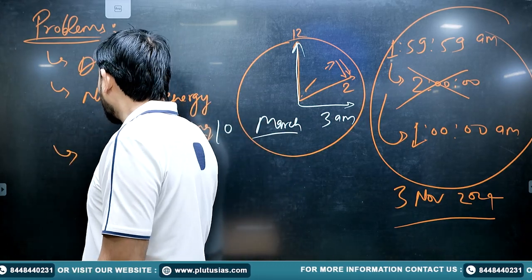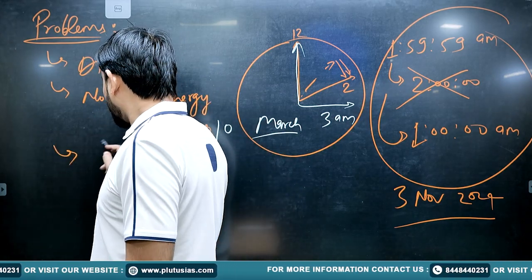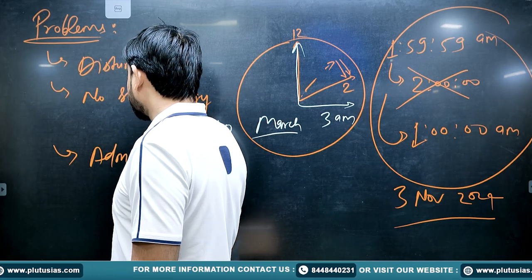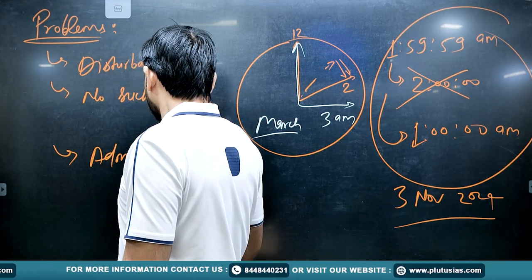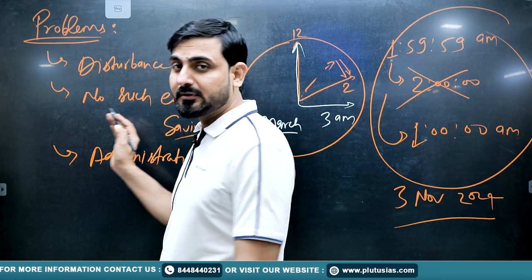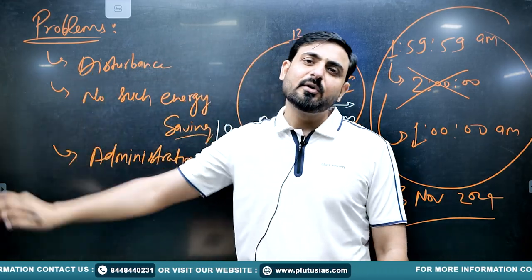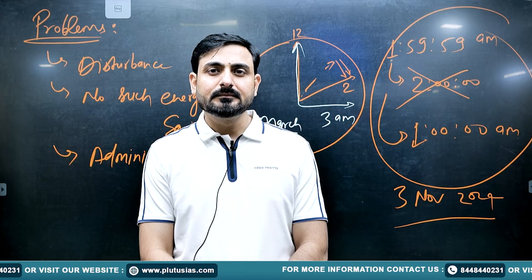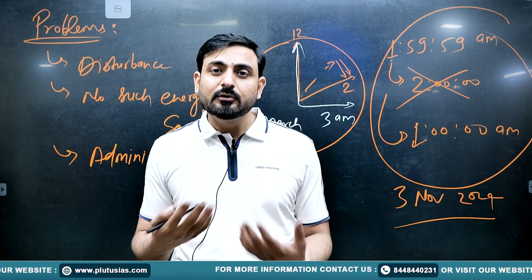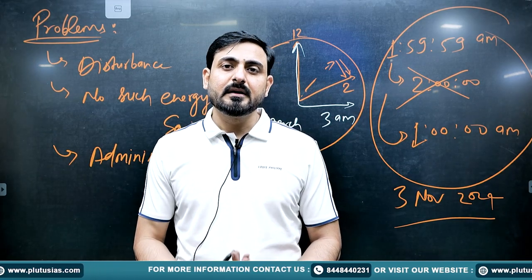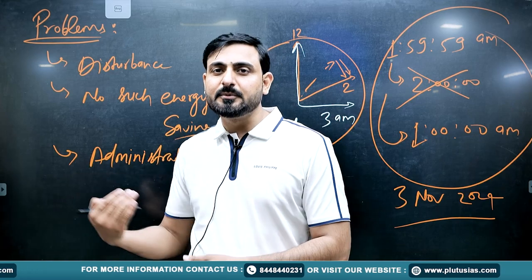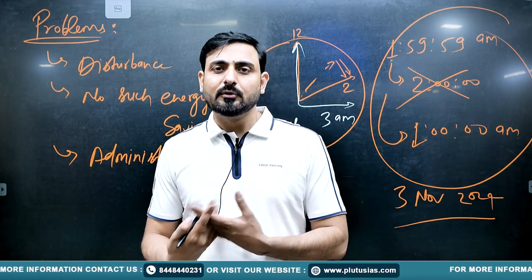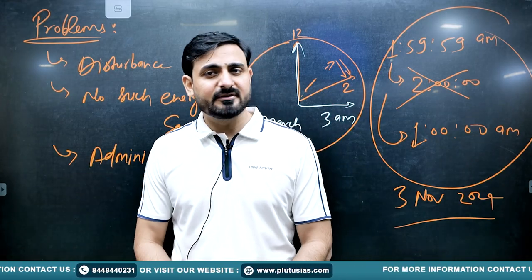Daytime saving also creates difficulty in administration. All people across all regions and all states need to reset their clocks twice a year. This creates differences and is a major problem especially for less-educated people and those with a lower level of understanding of why such practices are followed.